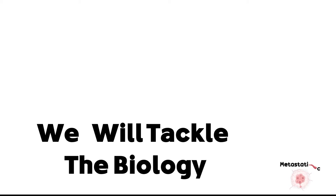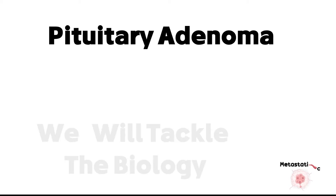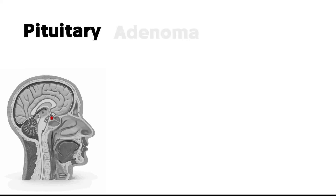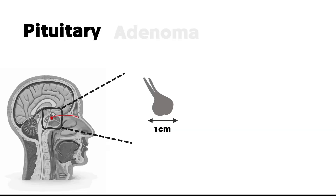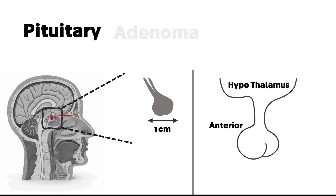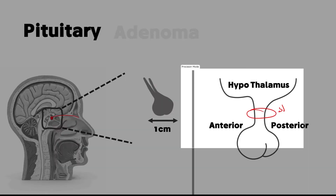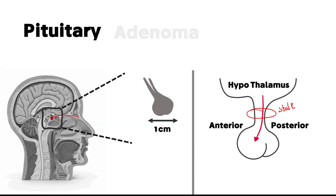In this video we will tackle the biology of pituitary adenoma. First, the pituitary gland is the master gland of the body. It's found right behind the nose and its diameter is one centimeter. It's connected with the hypothalamus by a structure called a stalk.